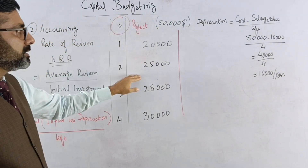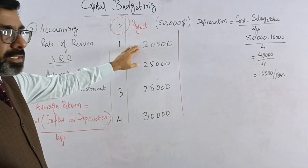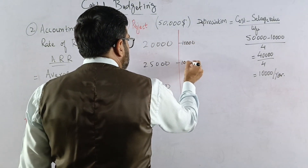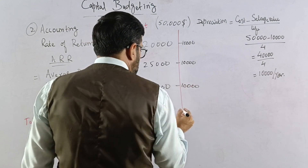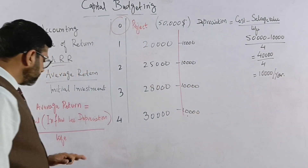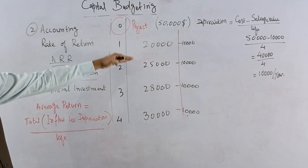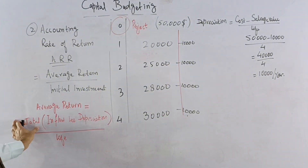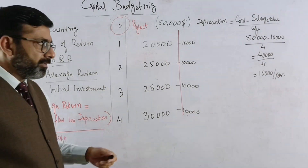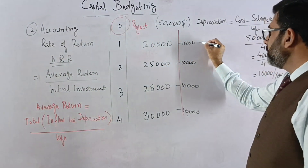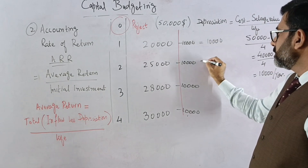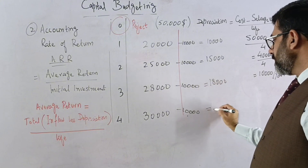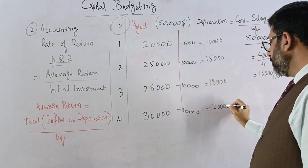Now we subtract 10,000 depreciation from each year's inflow. For all four years, we deduct 10,000. The resulting net returns are: 10,000, 15,000, 18,000, and 20,000 for years one through four respectively.